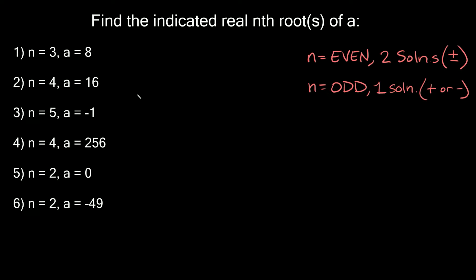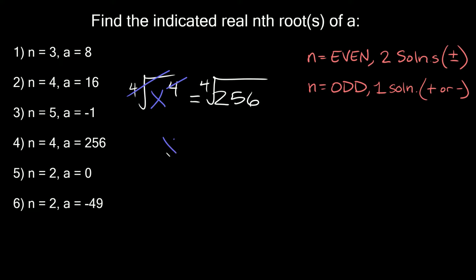Number 4: n is equal to 4 and a is equal to 256. So we have x raised to the fourth equal to 256. Four is an even exponent, so we'll have two solutions. We take the fourth root of both sides — these cancel out — giving x equal to the fourth root of 256, which is plus or minus 4. Because 4×4×4×4 = 256, and (-4)×(-4)×(-4)×(-4) equals the same thing. Our two roots are positive and negative 4.